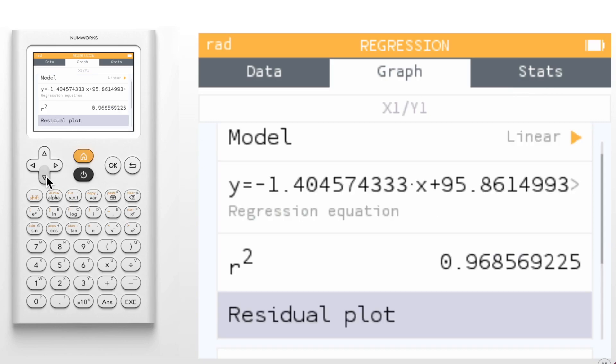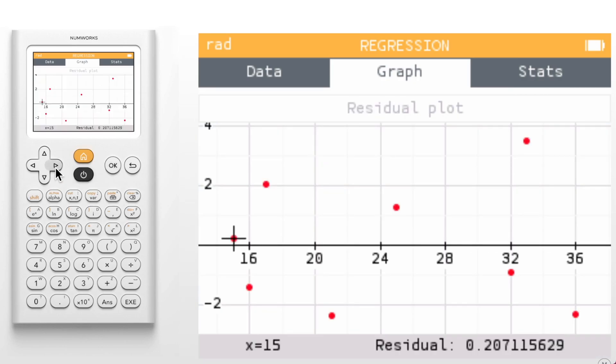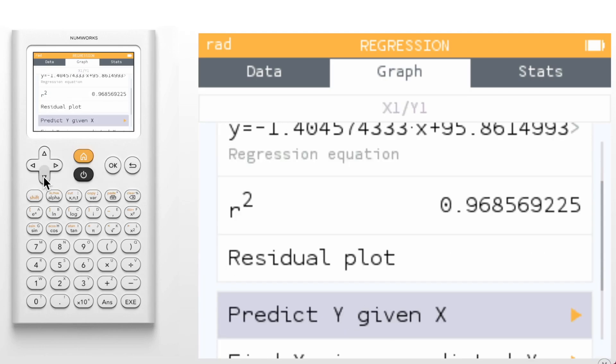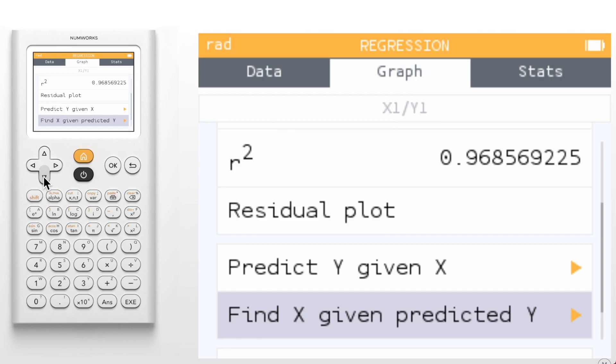One of my favorite new features is the residual plot. By simply pressing OK, you'll receive the residual plot and can navigate through the data points to view the value and its residual. Predictions are still available, but we have renamed them to make them a bit more clear. You can now predict Y given X or find X given a predicted Y value.